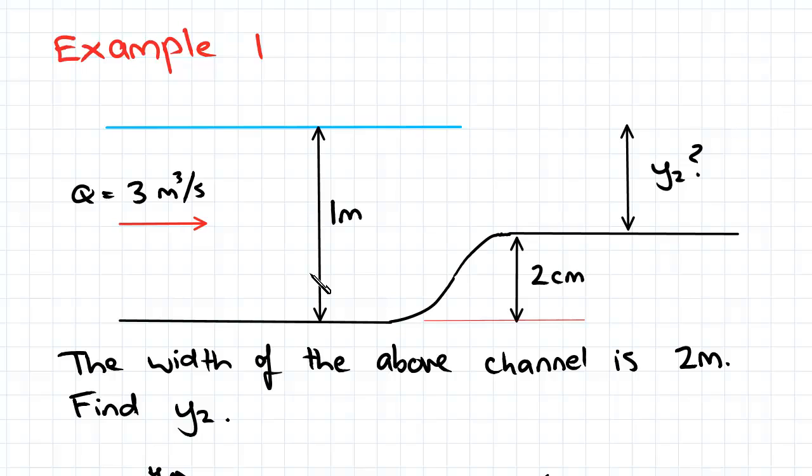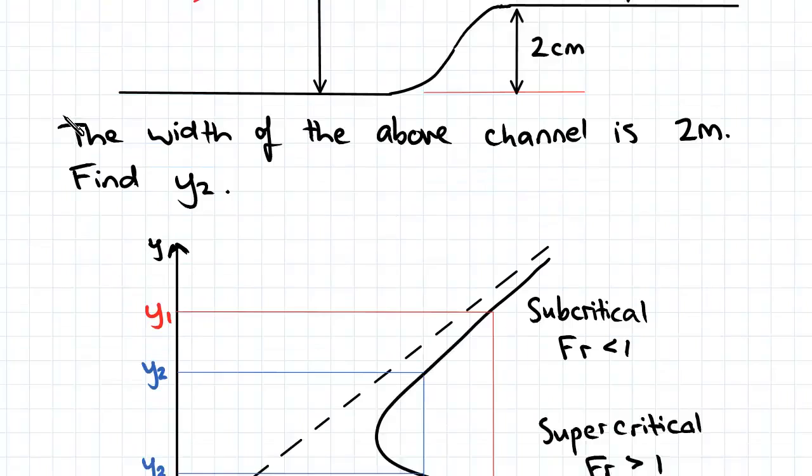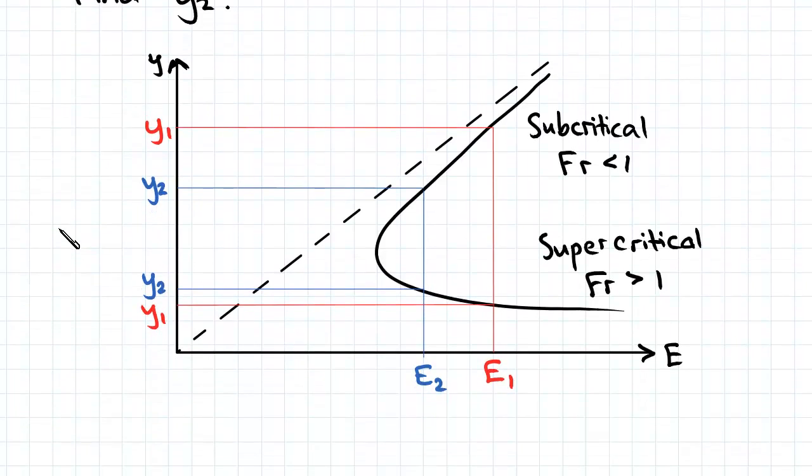Now we've been asked to find y2. In order to do so, as we've seen before, we're going to have to use y1 to find e1, then use delta z to find e2 which will enable us to find y2. In this process we need to determine which branch of the specific energy curve we'll be using, so let's try to figure that out first.